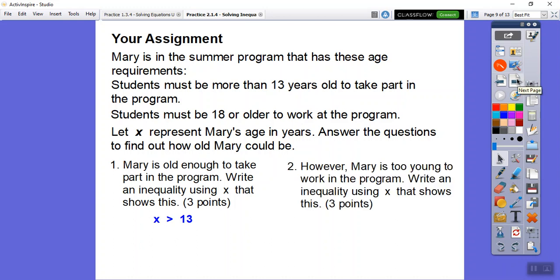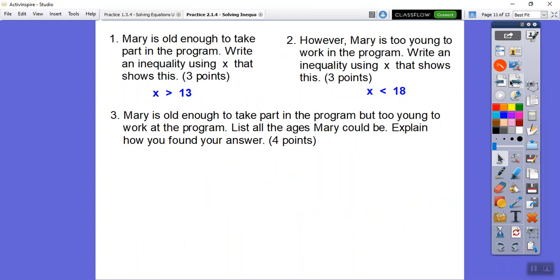However, Mary is too young to work in the program. Write an inequality using X that shows this. So they could be 18 or older to work in the program. She's not quite 18, she's going to be less than 18. So here's Mary, she's somewhere between 14 and less than 18, somewhere bigger than 13. So 14, 15, 16, and then less than 18.